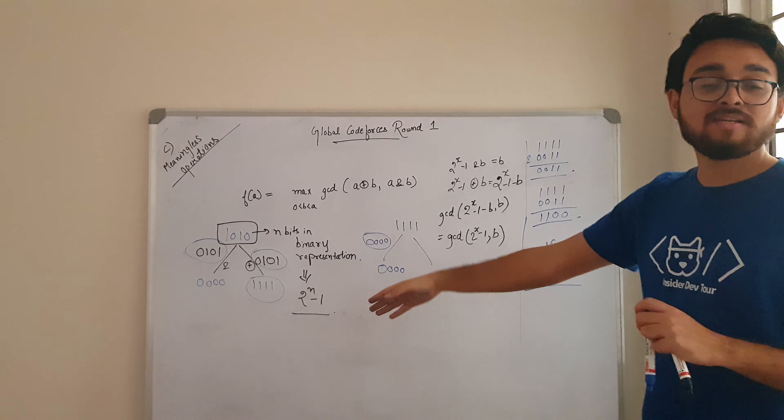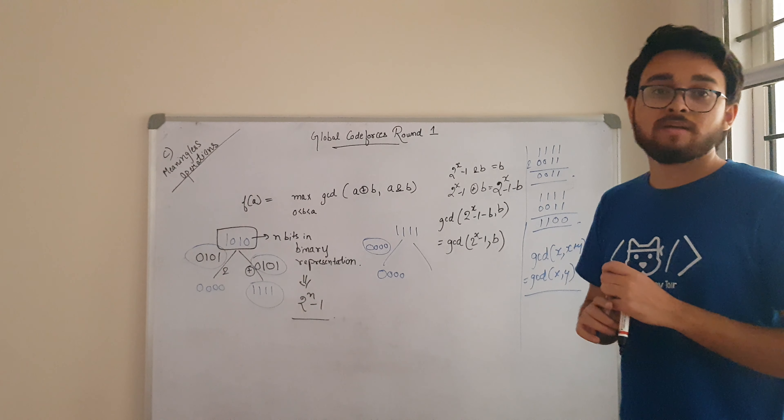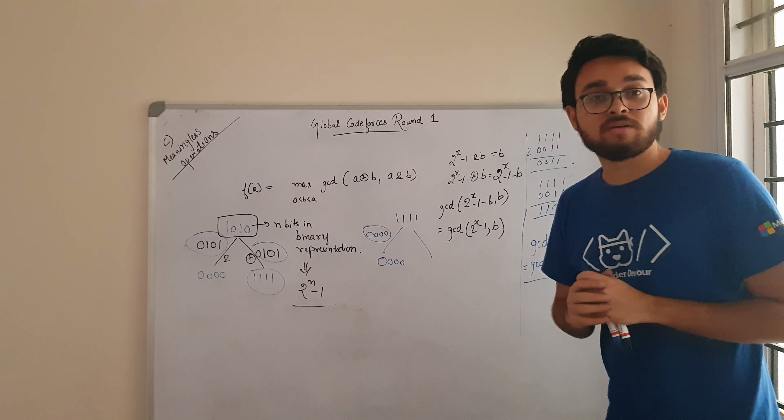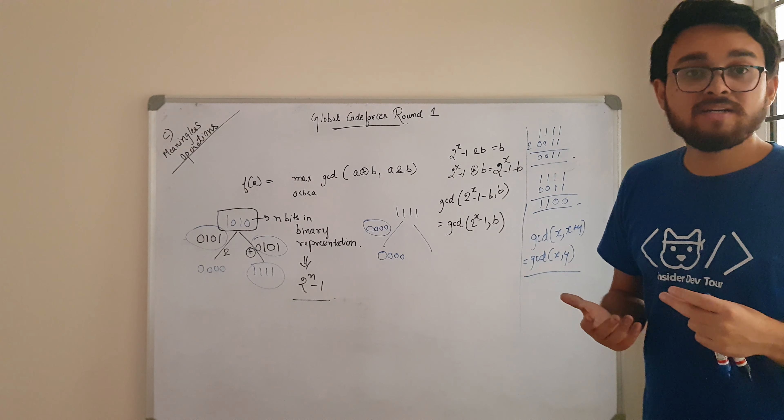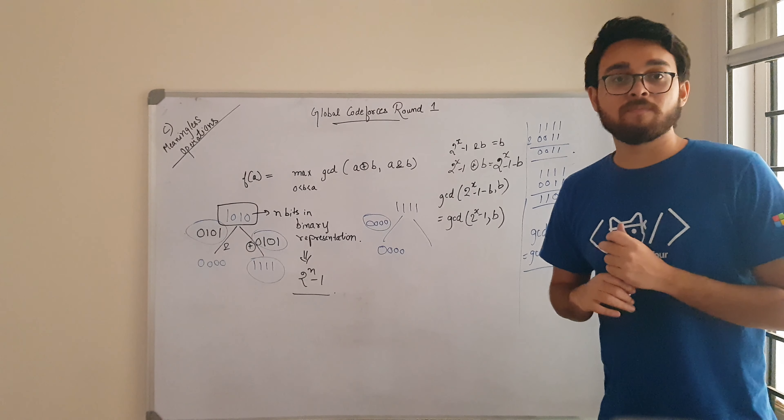And then you can represent the answer as 2 to the power n minus 1. So, that will be all for this problem. For solution and implementation details, follow the link in the description below. Thank you.